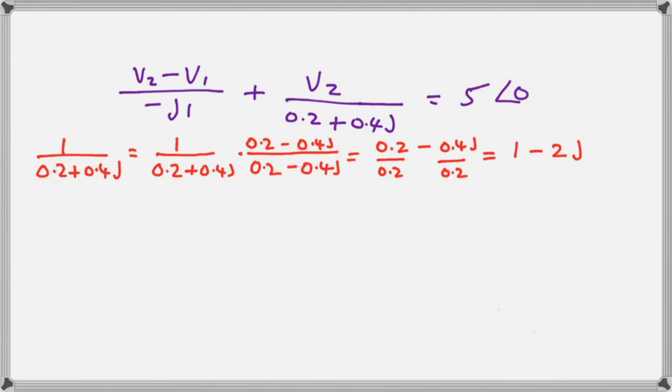Here's the other equation. And we show you how to find the reciprocal there in red of 1 over 0.2 plus 0.4 J.